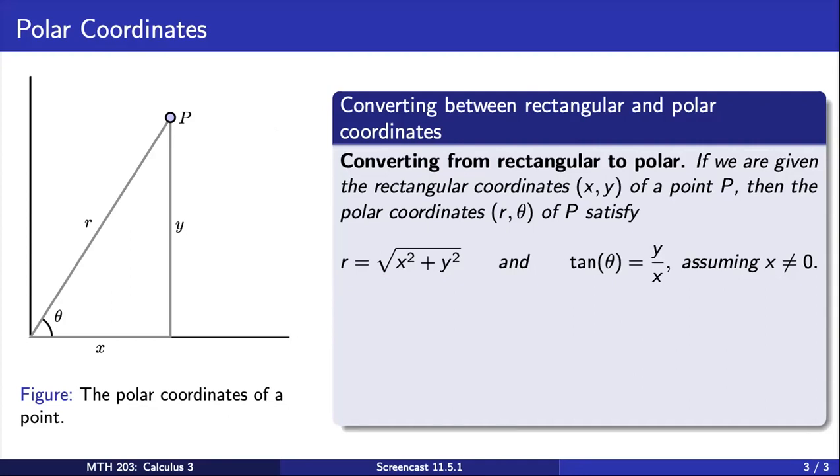Next, we see using right triangle trigonometry, using the fact that tangent of an angle in a right triangle gives us the ratio of the opposite side over the adjacent side, we see that tan(θ) is going to be y over x. This is assuming that x is not equal to zero.